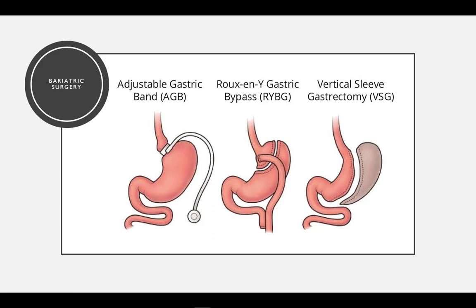When it comes to surgery for obesity, there are many different types. We will discuss the three most common. The first surgery is an adjustable gastric band. A band is placed at the top of the portion of the stomach so the person will feel full very quickly when eating, thereby reducing calorie intake. This type of surgery is purely restrictive, simply restricting the amount of food consumed. It is the least invasive surgery, leaving all of the anatomy of the stomach, but it also has the least success. It is completely reliant on the person following their diet by eating less food and exercising.